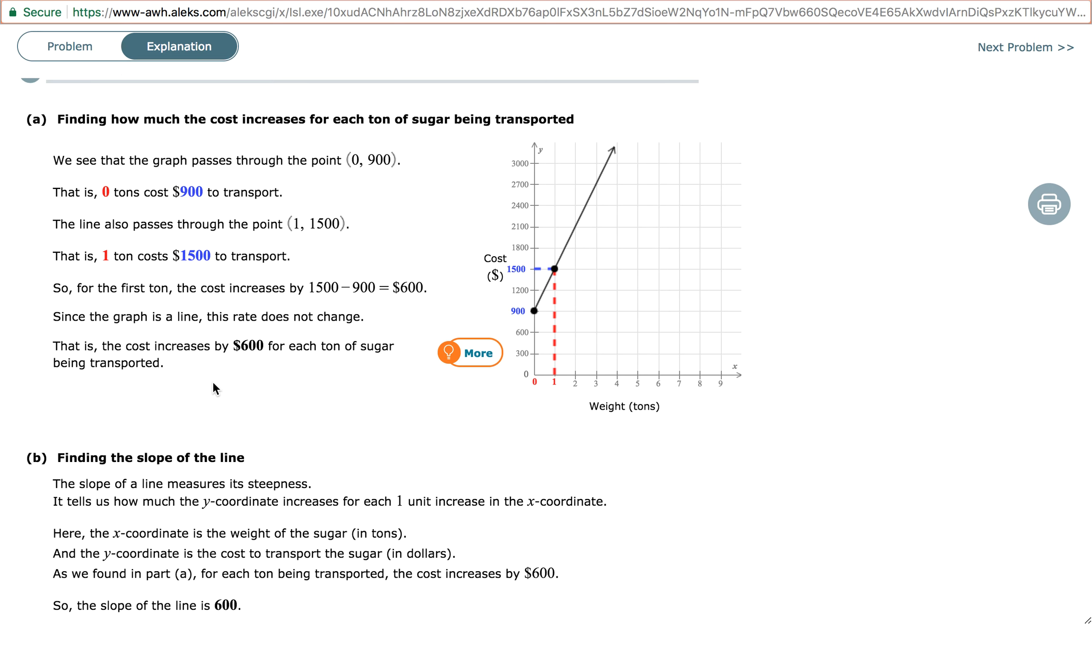Now, what you'll notice in these problems is that in part B, when you're being asked to find the slope of the line, you're actually being asked the same question as part A. But the only difference is we just write the number without any unit. In other words, we just write 600 for the slope.